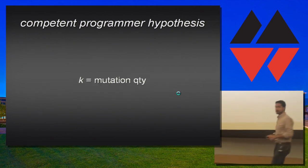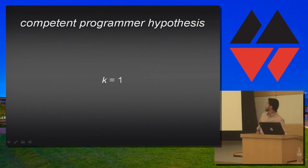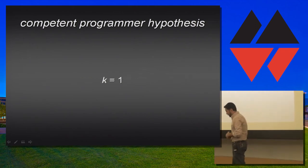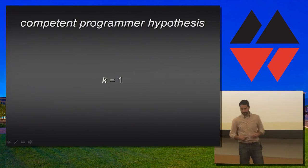So, in terms of our mutation quantity variable K, research has shown that we can, we only need one mutation to capture this area, this class of bugs introduced by experienced programmers.